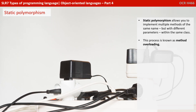So let's first look at static polymorphism. This allows you to implement multiple methods of the same name but with different parameters within the same class, and this process is known as method overloading.